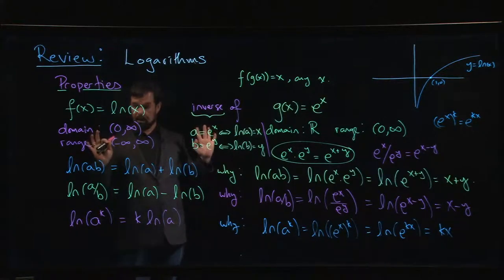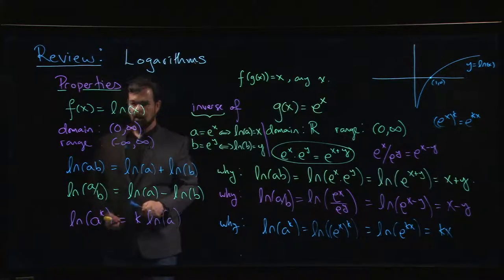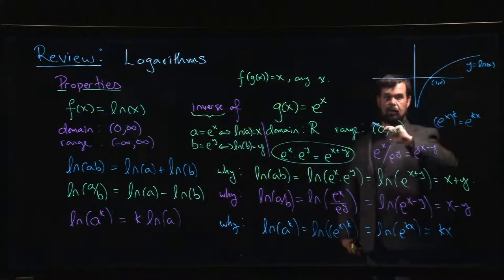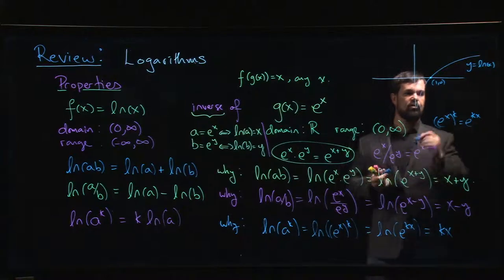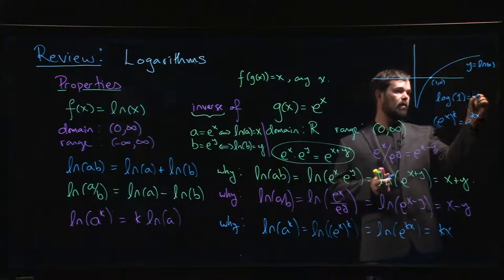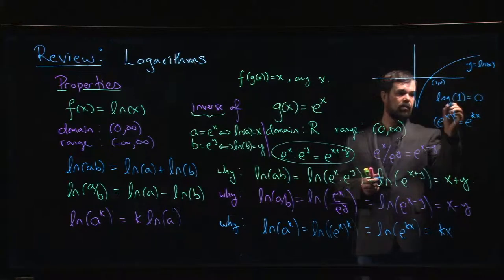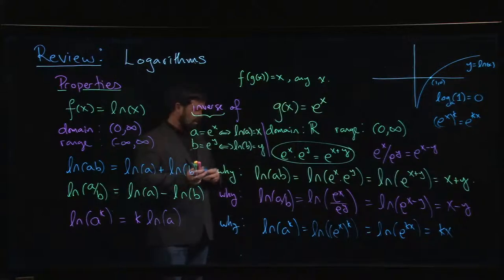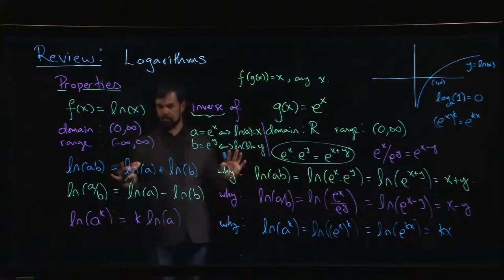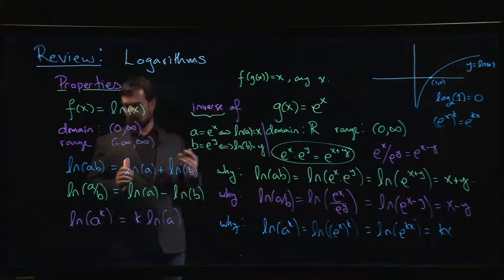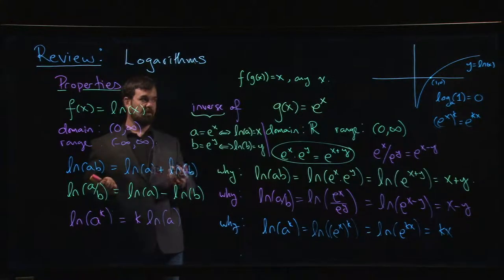Those are the three main algebraic properties of logarithms, along with domain, range, and the graph. Another useful thing to remember is that the log of 1 equals zero — this is true for any log in any base. This is really all you need to know for the natural log, because there's a formula called the change of base formula that lets you work with logs in other bases. We'll look at that in the next video.